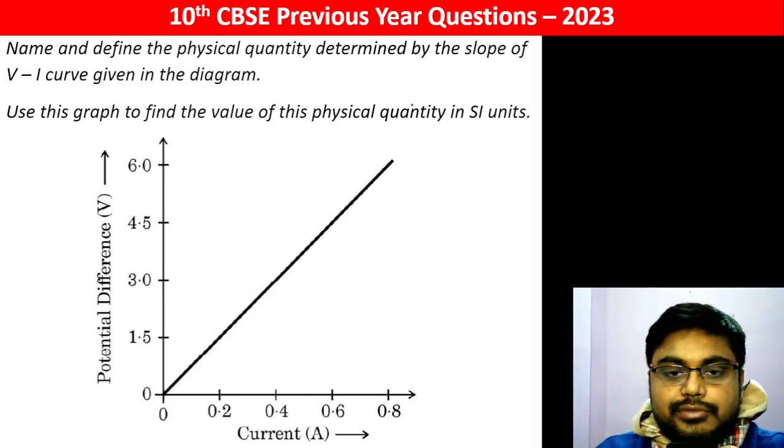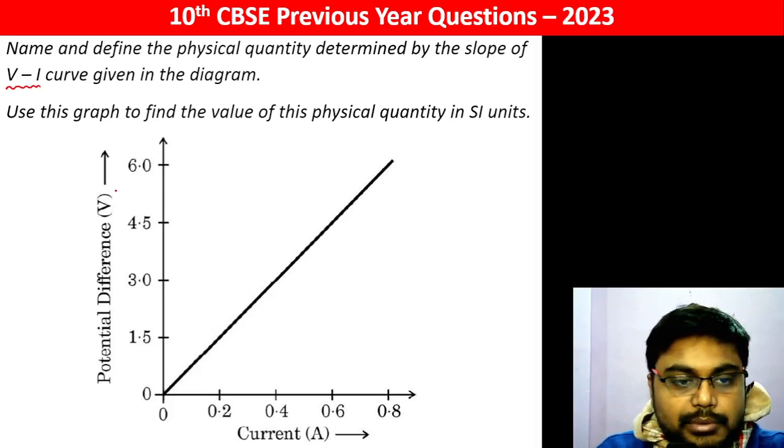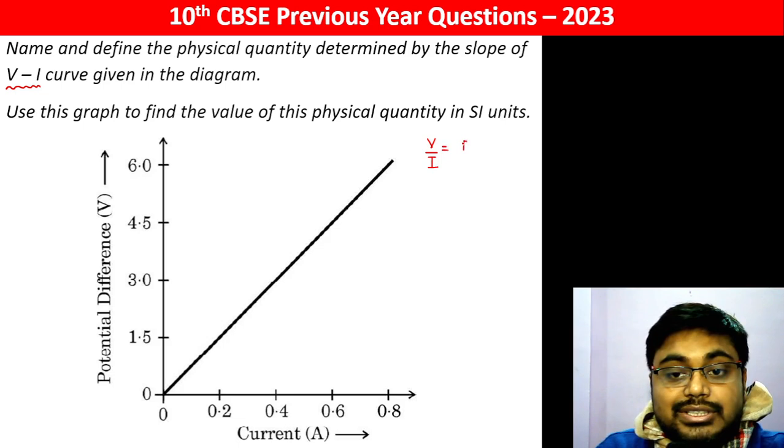Name and define the physical quantity determined by the slope of the V-I curve given in the diagram. V-I curve, basically it's V by I. V by I is resistance.